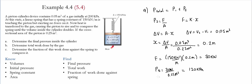This is the pressure contributed by the spring. The total pressure is simply the initial pressure of 200 kilopascals plus the spring pressure of 120 kilopascals. Therefore, the final pressure is equal to 320 kilopascals.